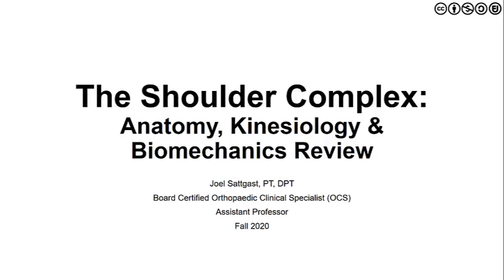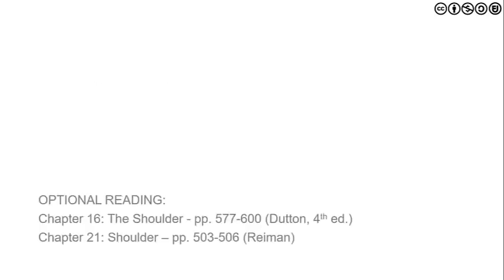Today we're going to be talking about the shoulder complex and going through a review of the anatomy, kinesiology, and biomechanics of this anatomical region. If you'd like background information, some optional reading could be chapter 16 in Dutton's 4th edition text, or chapter 21 of Raymond's text, which will provide additional detail.